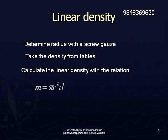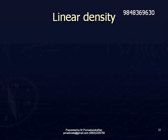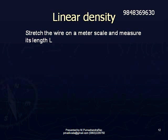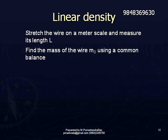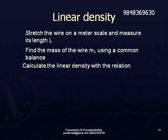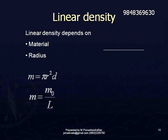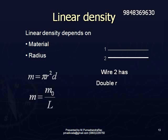Another way is to spread the wire on a meter scale and measure its length, then weigh this wire in a common balance to find its mass M₀. Divide M₀ by the length of the wire to get mass per unit length. If we consider two wires — if the radius of the second wire is double that of the first wire, then its linear density will be four times, provided the lengths are equal.